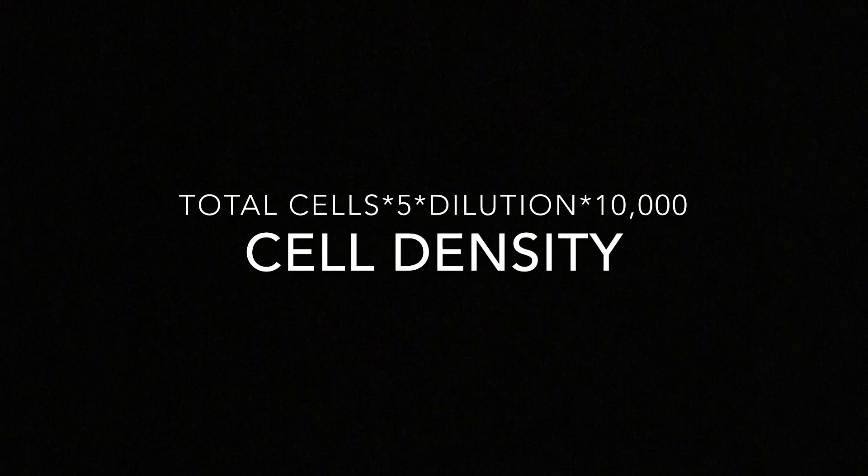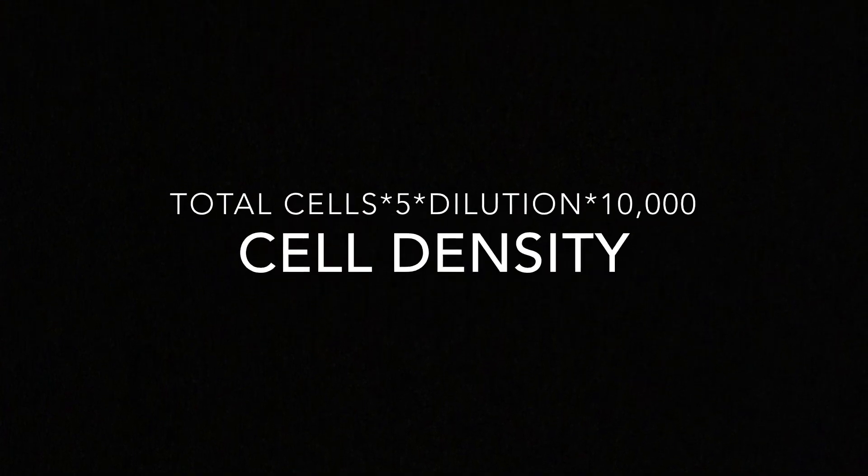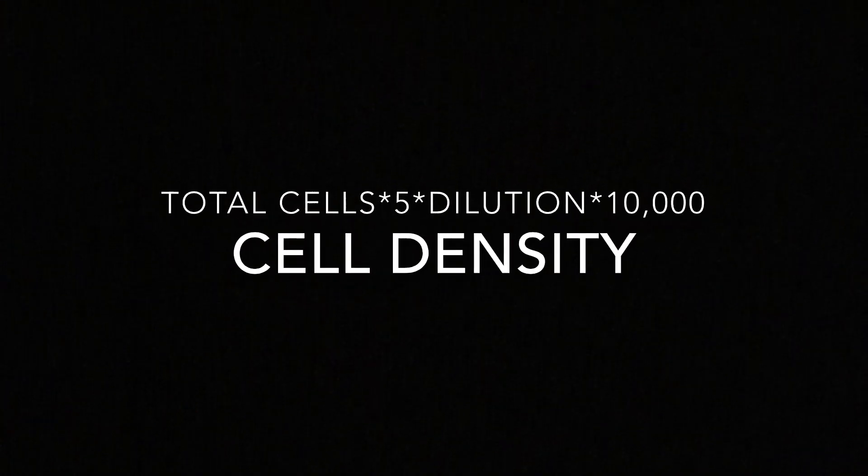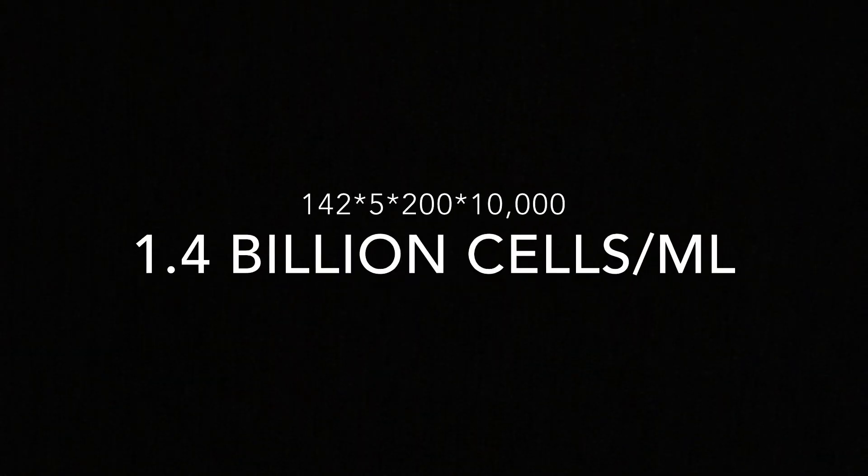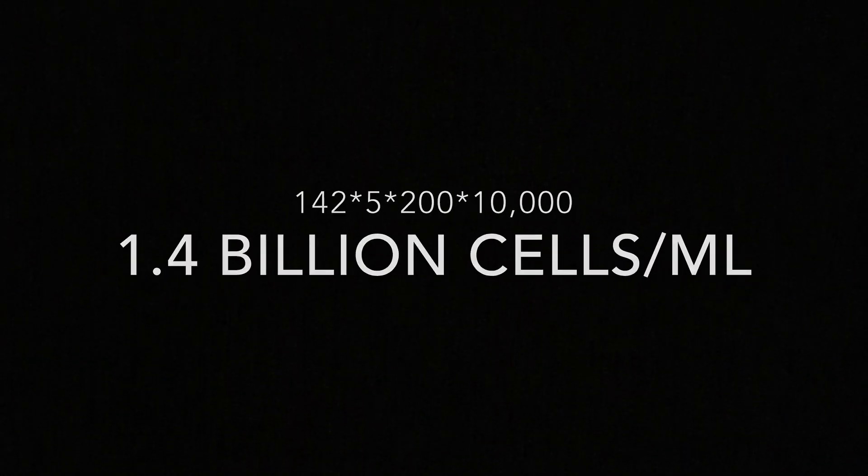To calculate cell density, you multiply the total cells by five, then by your dilution, and then by ten thousand. This sample has a density of 1.4 billion cells per milliliter.